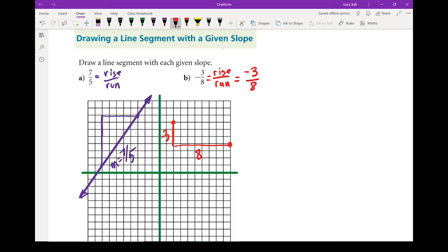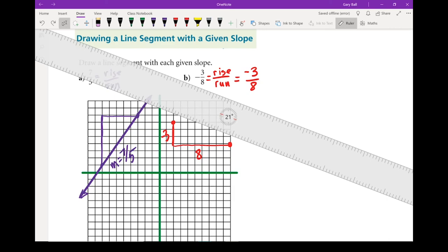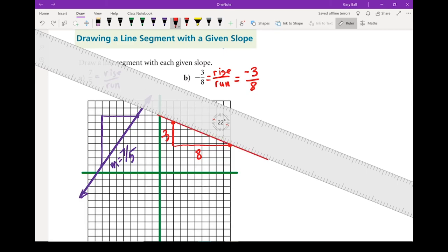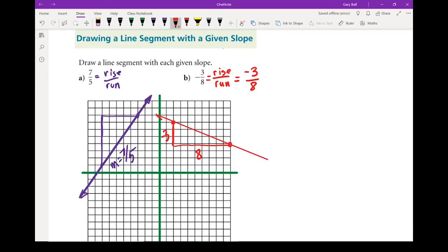I've got my two points. Once again, this corner doesn't matter. Let's grab a ruler and draw our line. Line it up nice. And don't forget to put your arrows on the end, because that does continue forever in both directions. There's my line with slope of negative three eighths.